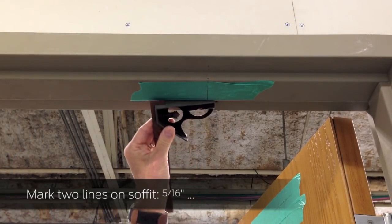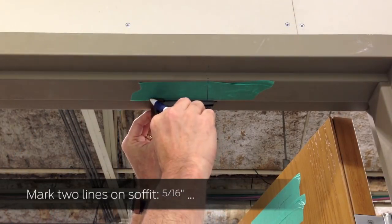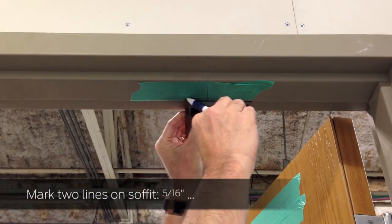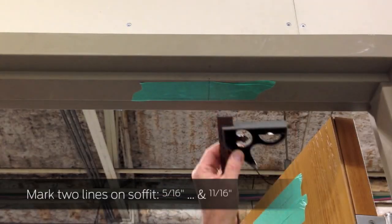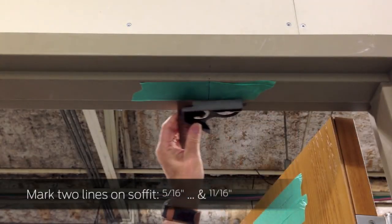On the frame, use the T-square to mark two lines along the soffit, measuring from the door side. One at five sixteenths, and the other at eleven sixteenths of an inch.